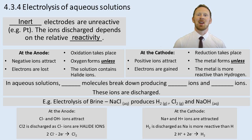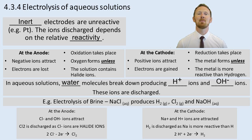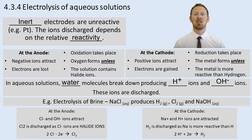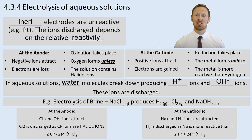In aqueous solutions, water molecules break down and produce H⁺ ions (hydrogen ions) and OH⁻ ions (hydroxide ions), and it's these ions that are discharged. So we get hydrogen at the cathode if the metal is more reactive than hydrogen because the H⁺ ions in solution are discharged. We get oxygen at the anode if there's no halide present because the oxide ions in the OH⁻ are discharged.